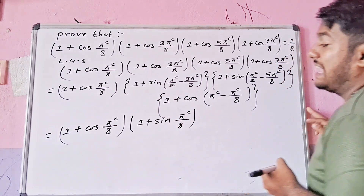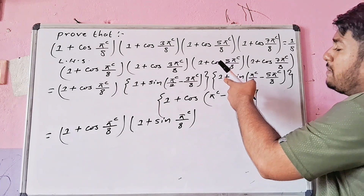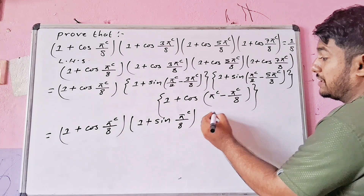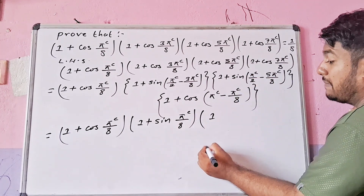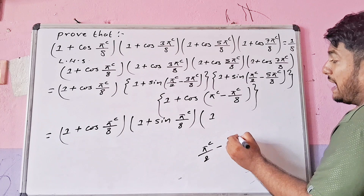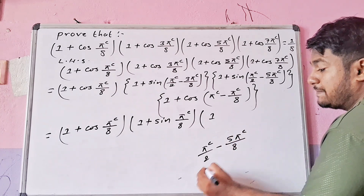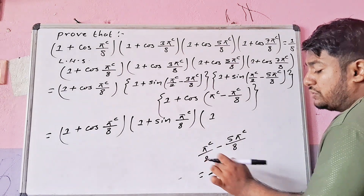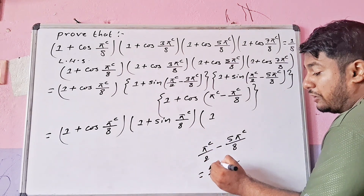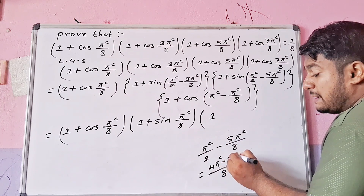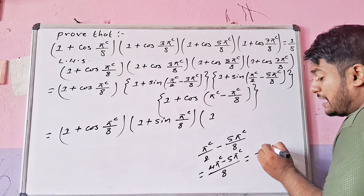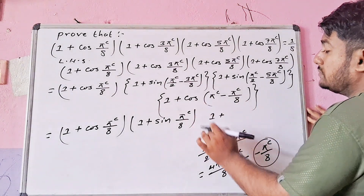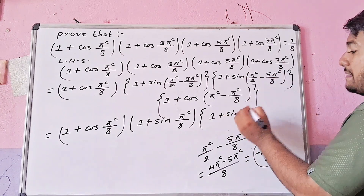Now, 1 + sin(π/8). Since π/2 minus π/8 gives us a sine substitution, the cosine terms transform into sine terms. So 1 plus cos(3π/8) becomes 1 + sin(π/8).